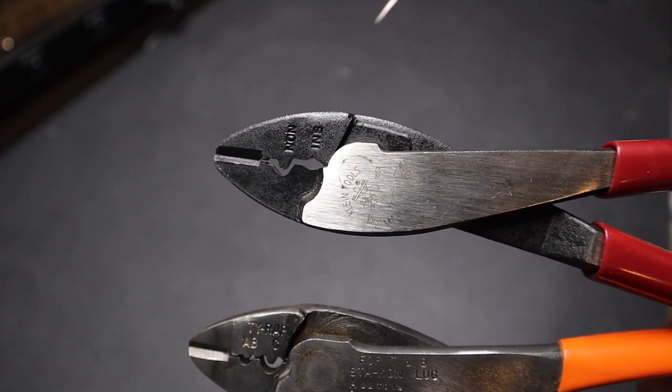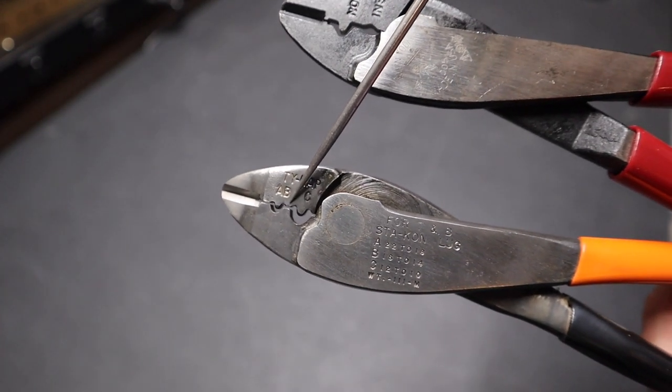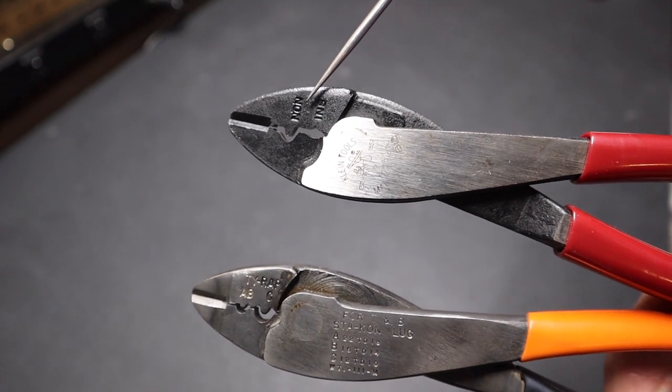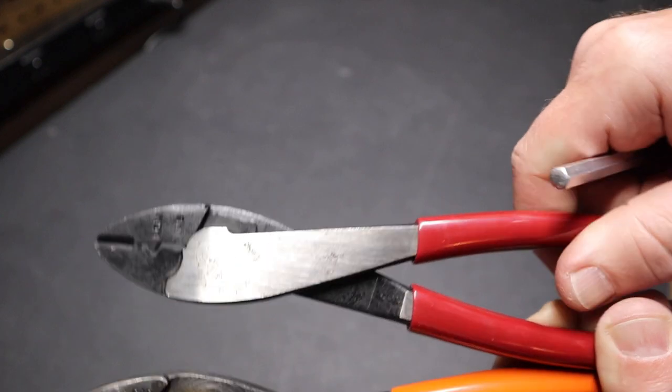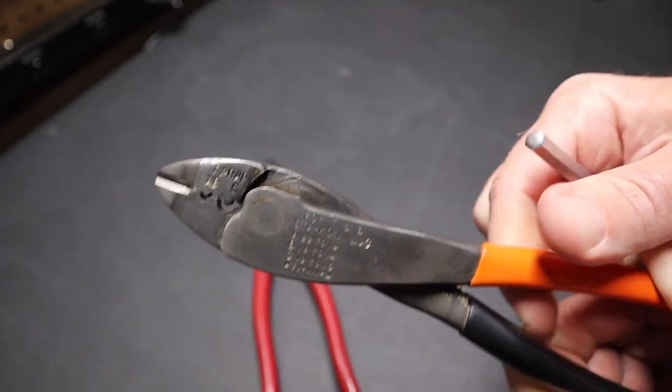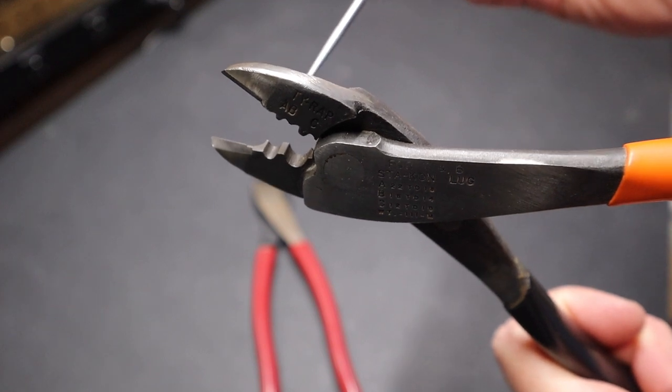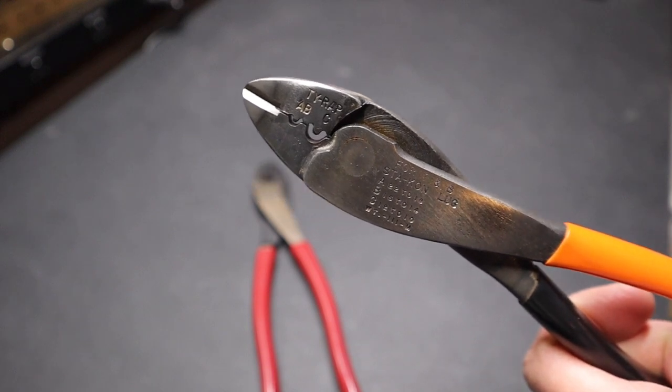Now, one thing I want to mention is the Klein Tools does have a crimper that has the exact same die as this Thomas and Betts crimper. It's the Klein Tools model 1006. In fact, it looks very much like this 1005 model, except it has black vinyl dip grips. And I'll have a link to it in the description. It won't be quite as thick across as this Thomas and Betts tool is, but otherwise it has the exact same die. So if you're looking for Klein Tools and something to cost a little bit less, you can go that route.